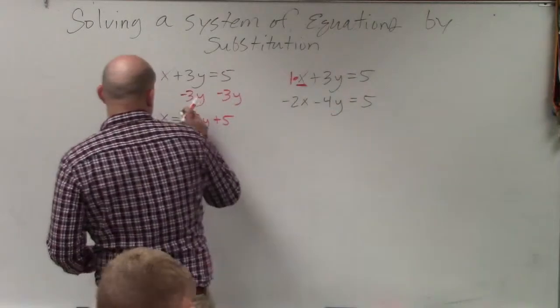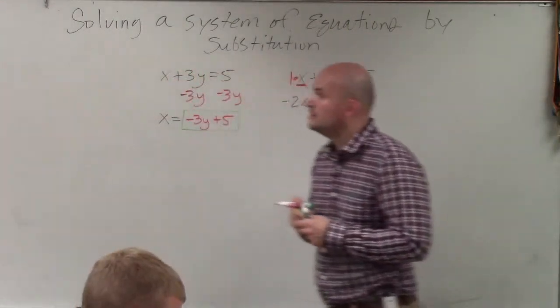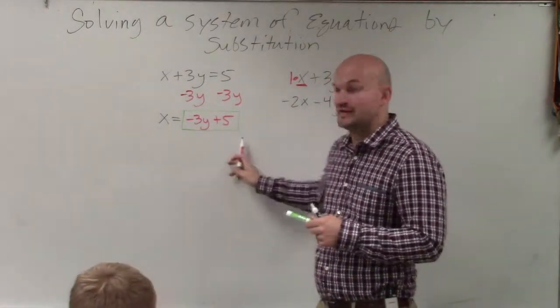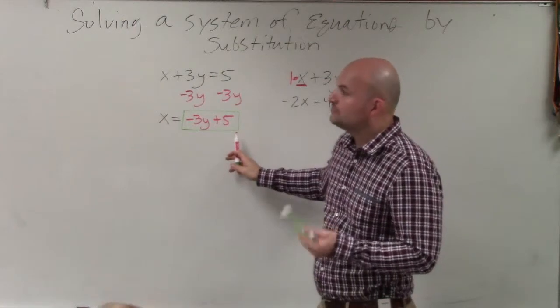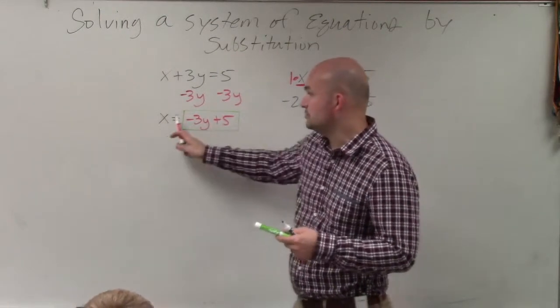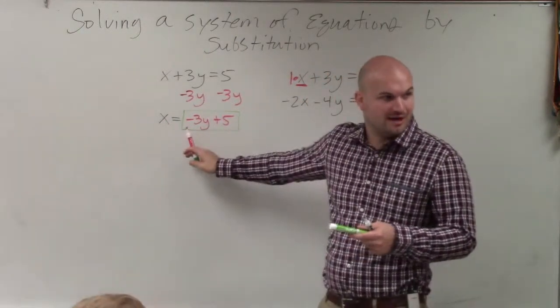Now, when I'm talking about the quantity that the variable is equal to, this is what I'm talking about. So step number 3 says plug in the quantity, which is in the green. Plug in the quantity that the variable is equal to. So the variable is equal to the green quantity. Does everybody see that? OK.